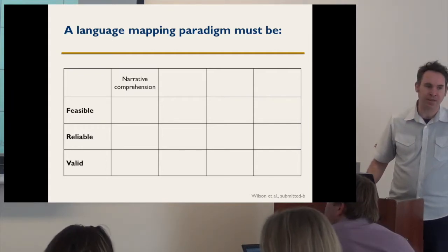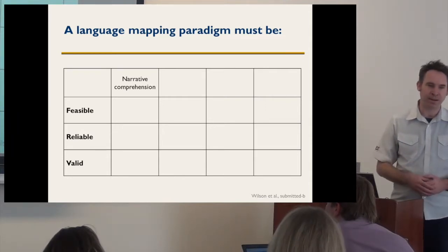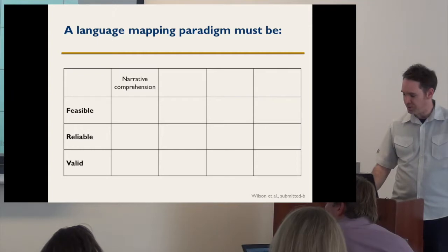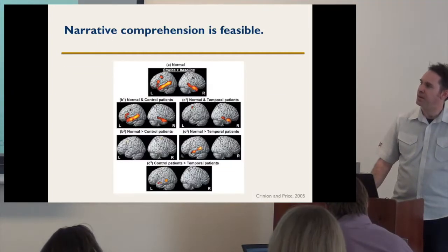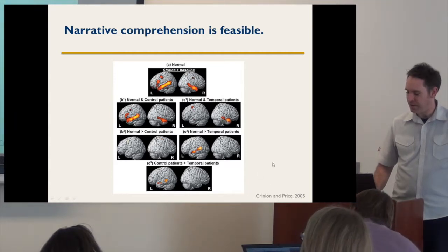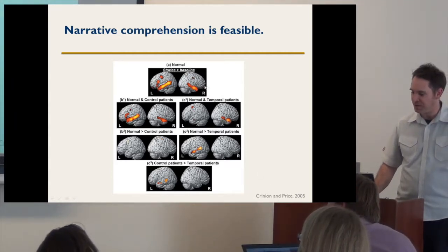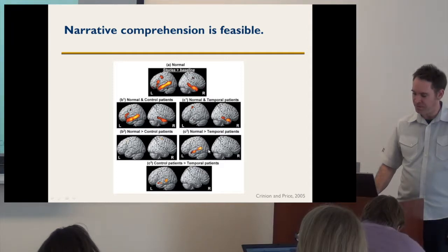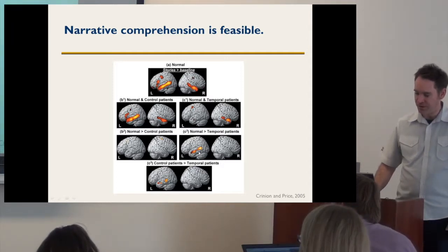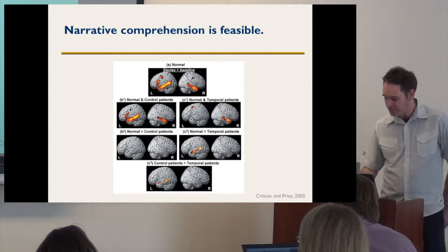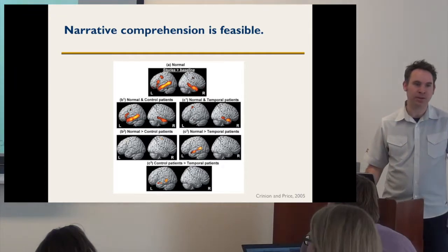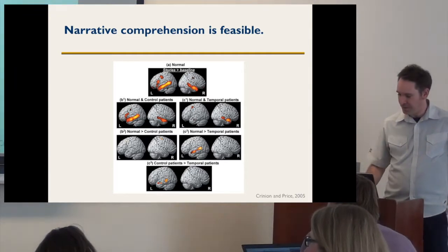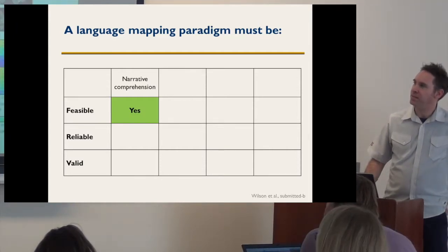Narrative comprehension is a paradigm used a lot — you get people to listen to narratives, with a control condition like reversed speech or spectrally inverted speech. It's used because it's feasible. This is an excellent study by Krinian and Price, really one of the best aphasia functional imaging studies. It shows that patients with temporal lobe damage have less activation in the left hemisphere — not very surprising. The paradigm is feasible; it's not difficult for people with aphasia to listen to stories in the scanner. So I'll give it a check mark there. But is it reliable and valid?